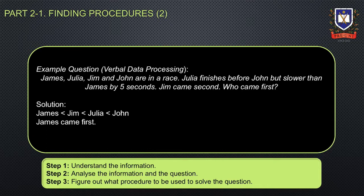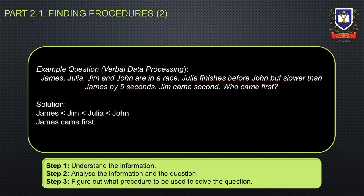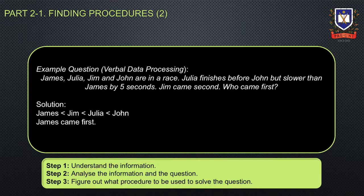Moving on, a verbal data processing question requires students to understand complex information and determine what procedure should be used to solve it. Consider the following example: James, Julia, Jim and John are in a race. Julia finishes before John, but slower than James by five seconds. Jim came second. Who came first? To solve this question: make sure you understand the information, then analyse the information and the question, then figure out what procedure should be used to solve it.